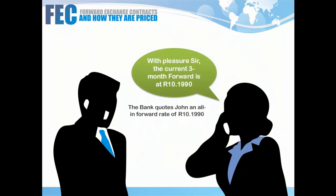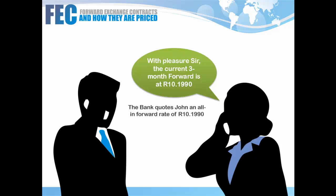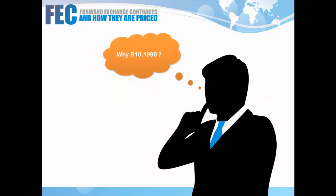The trader comes back and quotes John a rate of 10.1990. In other words, in three months from today John can come to the bank and purchase dollars at a rate of 10.1990 — and that rate is guaranteed right now. We don't have to wait three months to see where the spot is; this is the rate that John is going to commit to right this second.